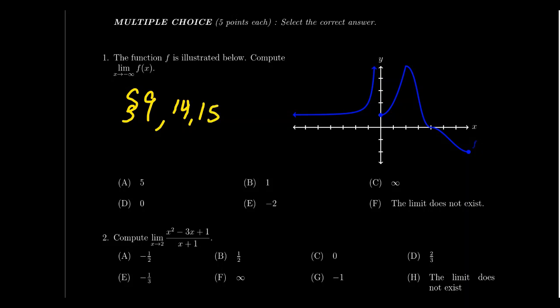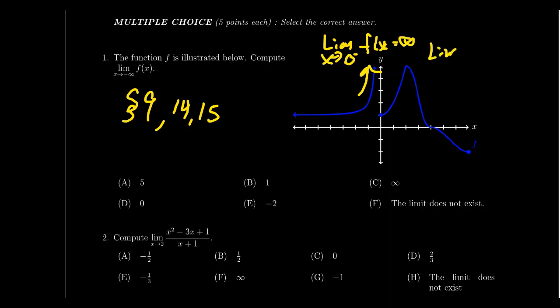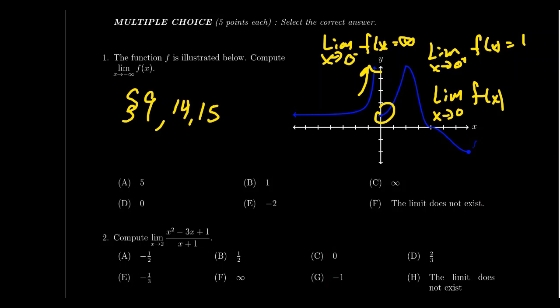The limit could be some finite number like five, one, or zero. It could be that the limit turns out to be infinity or negative infinity, so be aware of infinite limits. It could also be that the limit doesn't exist. For example, if I ask about the left-handed limit as x approaches zero, the limit would be infinity due to the vertical asymptote. The right-handed limit as x approaches zero from the right would be one. But the two-sided limit as x approaches zero gives infinity ≠ one, so the limit does not exist — DNE — and you would choose F in that situation. Be prepared for all those possibilities when computing a limit graphically.